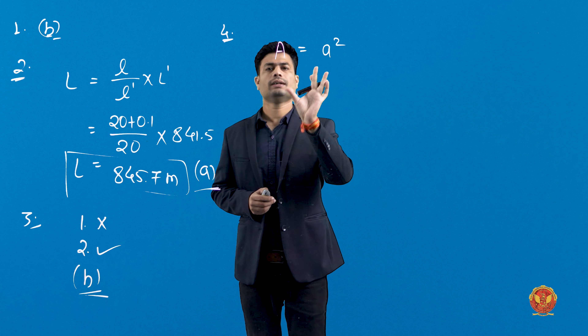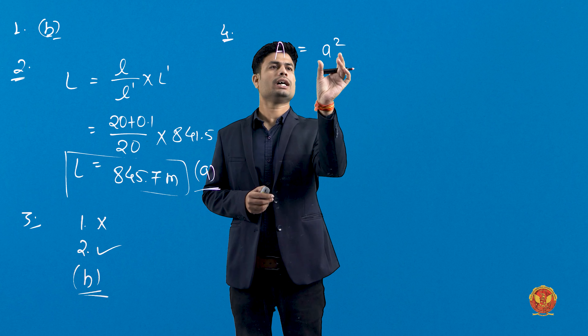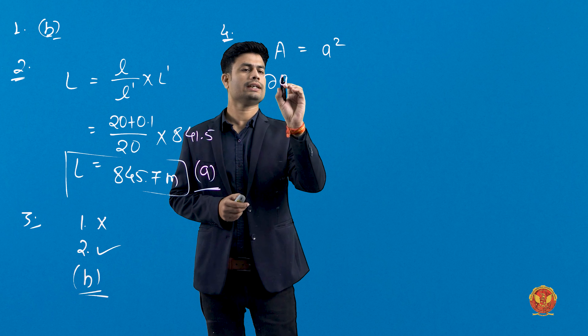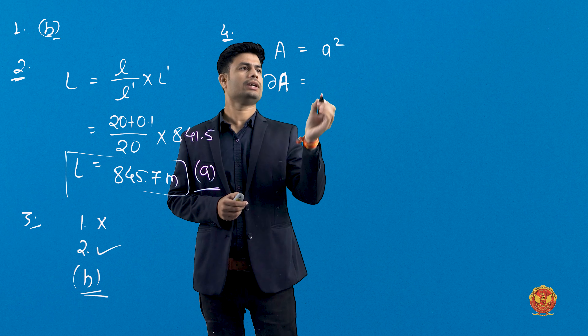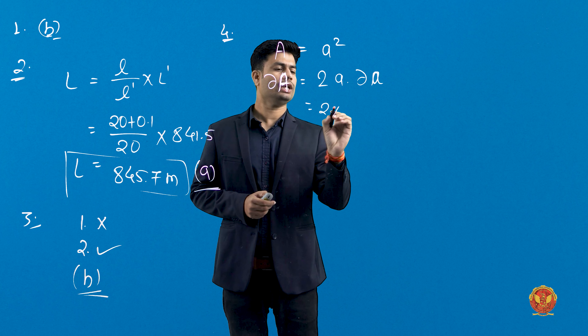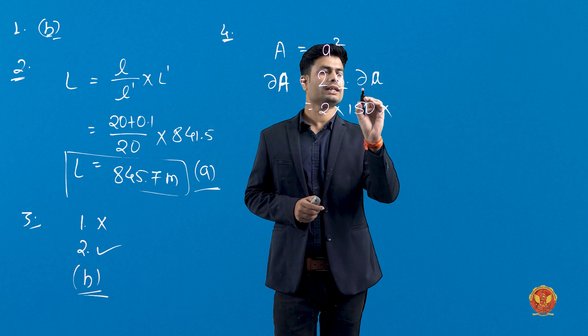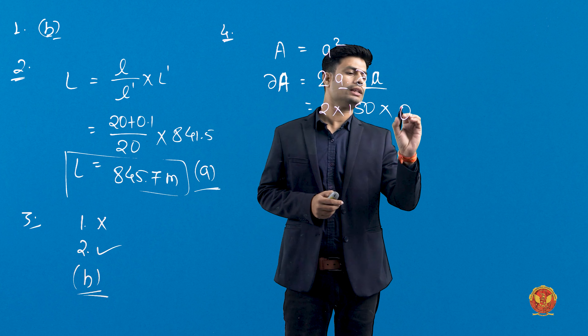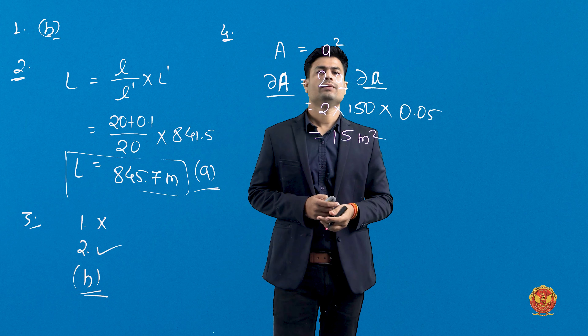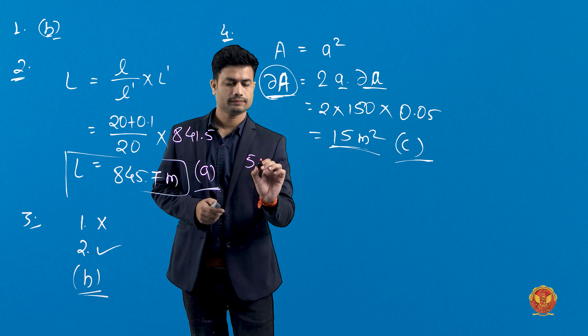Let A be the area of the field. We differentiate: for A equals a-squared, differentiating gives delta-A equals 2a times delta-a. Here 2a is the side of the square, which is 150 meters, and delta-a is the error, which is 0.05 meters. So the error in area is 2 × 150 × 0.05 = 15 square meters. The corresponding error in the computed area is 15 m², which is option C.